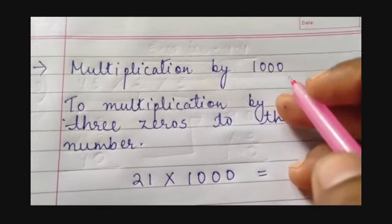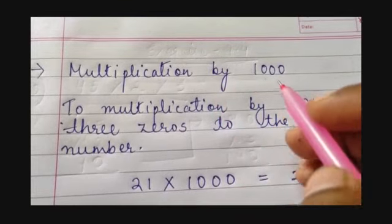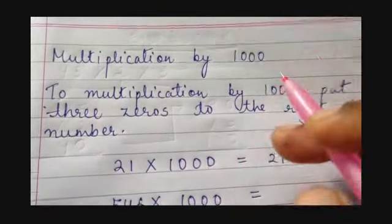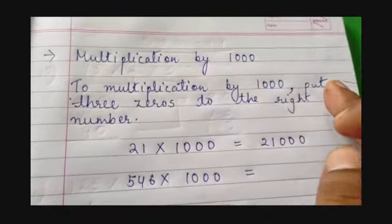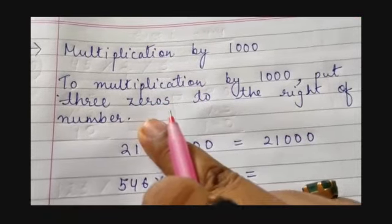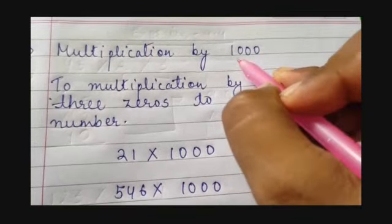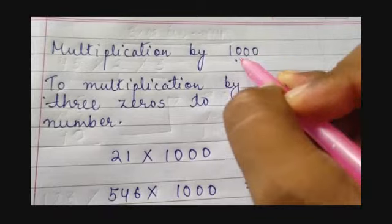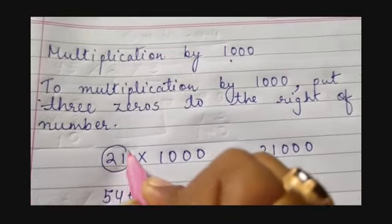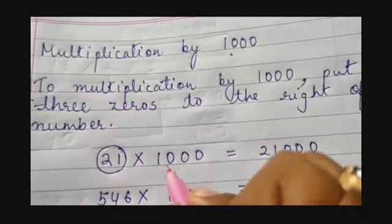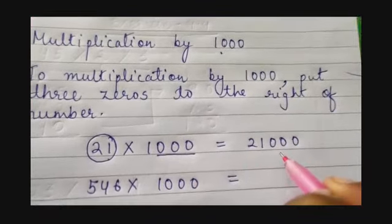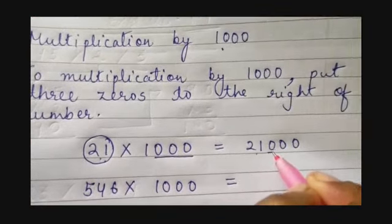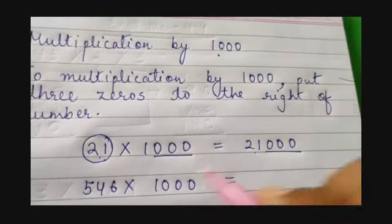Now the multiplier for you is 1000. If you want to multiply any number by 1000, you just need to put three zeros to the right of the number. You can count that in 1000 there are 3 zeros, so we will add three zeros on the right side. For example, the multiplicand is 21 — I just added 3 zeros to the right of the number.